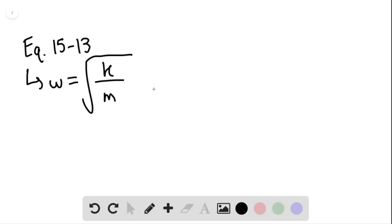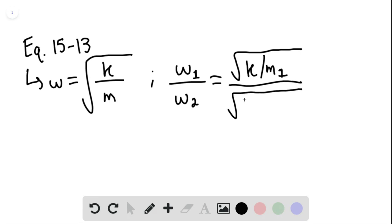And we then know for two different masses, we can set up a ratio. So omega sub 1 divided by omega sub 2, this would be equal to the square root of k over m sub 1 divided by the square root of k over m sub 2. And this is equaling the square root of m sub 2 divided by m sub 1.